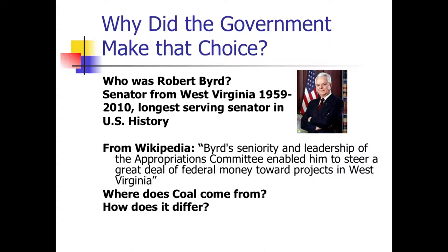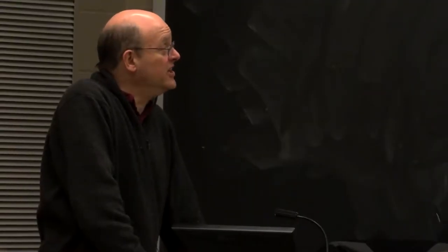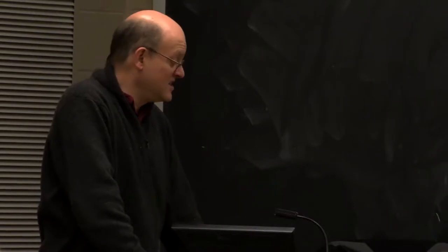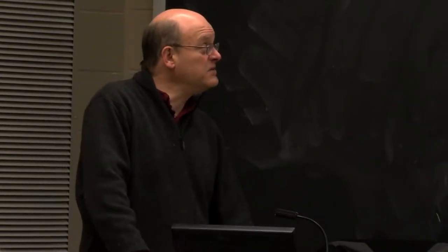He became chairman of the Senate Appropriations Committee. His seniority and leadership of the Appropriations Committee enabled him to direct a great deal of federal money toward West Virginia. He was just incredibly powerful.